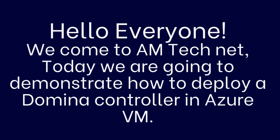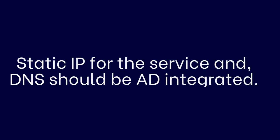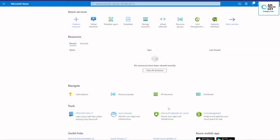Hello everyone, welcome to AMTechNet. Today we are going to demonstrate how to deploy a domain controller in an Azure VM. Before that, in this lab we have to check what are the prerequisites in order to deploy Active Directory. In Azure, a static IP should be added to the server, and in the DNS the primary DNS IP should be the same as the Active Directory server.